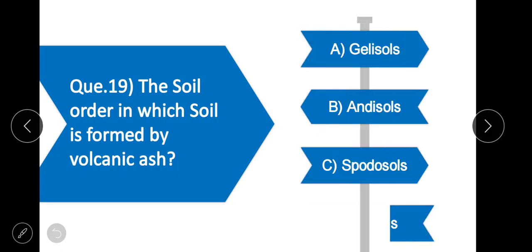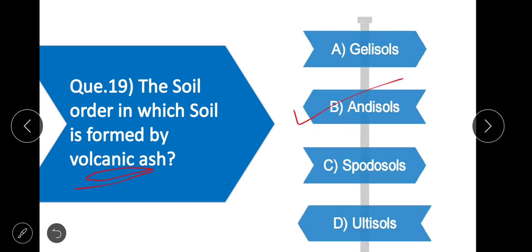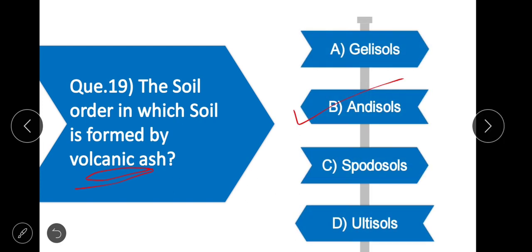Question 19: The soil order in which soil is formed by volcanic ash — option B is correct — Andisols. In Andisols, the soil is formed by volcanic ash.